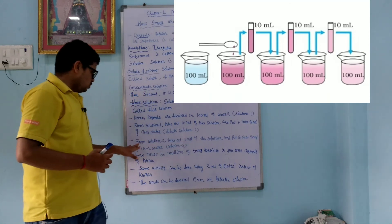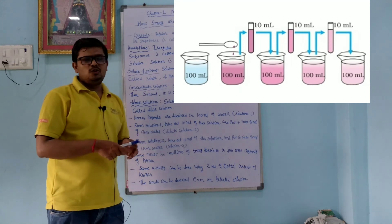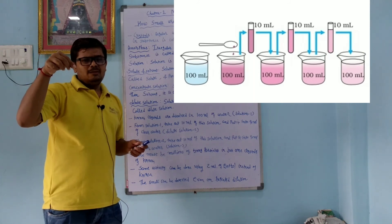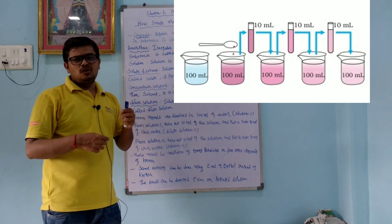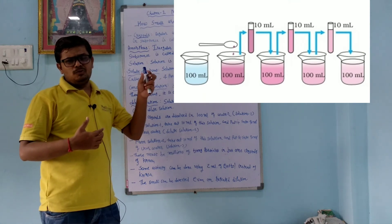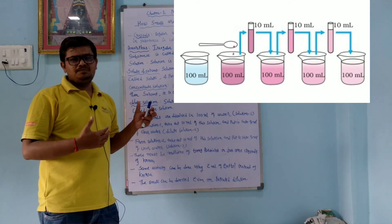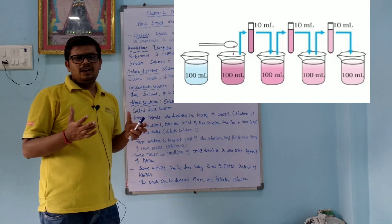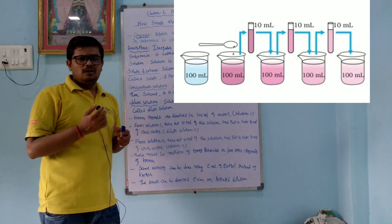From Solution 2, take 10 ml and add it to 90 ml of clear water to get Solution 3. Solution 2 is darker than Solution 3. From this activity, we conclude that KMnO₄ particles are present in larger numbers in Solution 1, fewer in Solution 2, and very few in Solution 3 — yet Solution 3 still shows a faint pink color.